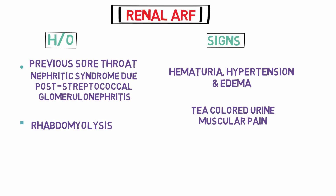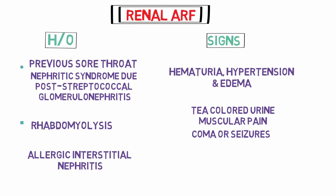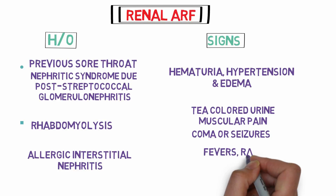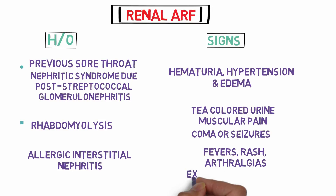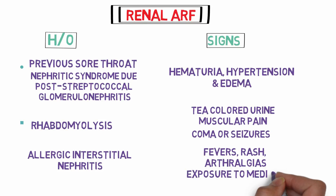Patients with rhabdomyolysis can also have a history of coma or recent seizures which may have initiated rhabdomyolysis. Allergic interstitial nephritis is also an important cause of renal ARF, and patients present with fevers, rash, and arthralgias. These patients can also have exposure to medicines like NSAIDs.